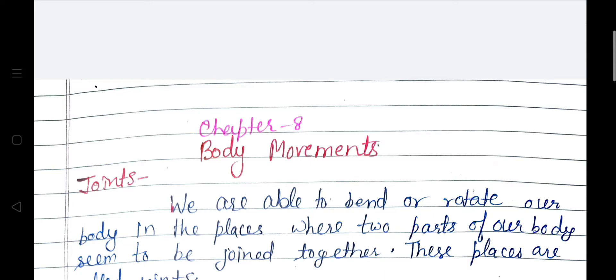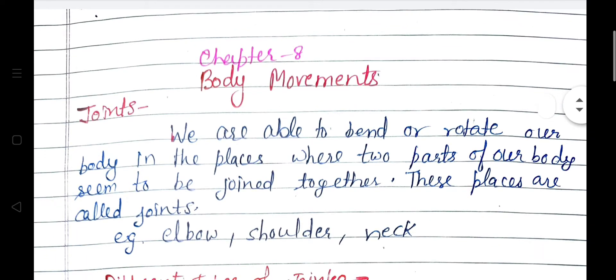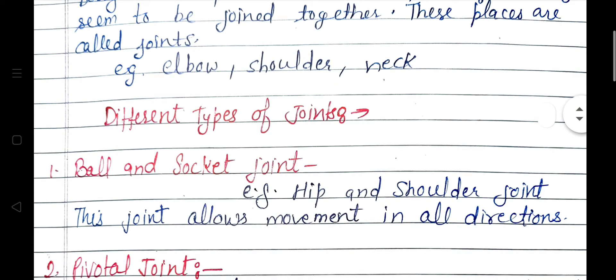Hello, welcome to my channel. Let us revise Chapter 8: Body Movements in one shot. Joints — we are able to bend or rotate our body in the places where two parts of our body seem to be joined together. These places are called joints. For example, elbow, shoulder, and neck. Different types of joints: first, ball and socket joint — it is found in hip and shoulder.